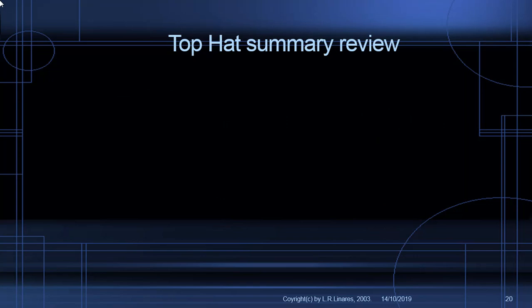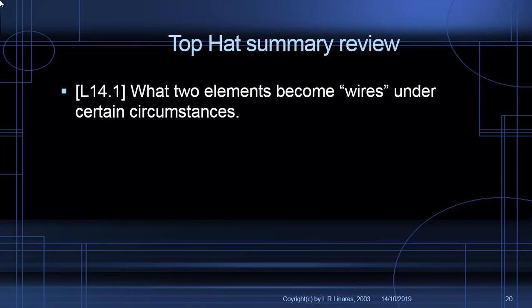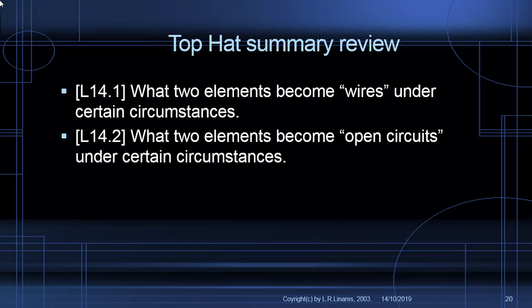At the end of class I ask Top Hat questions. What are two elements that become wires under certain circumstances? The answer: inductors in DC steady state behave like wires, and also independent voltage sources — when we kill sources, they become wires. And which two elements become open circuits? Capacitors become open circuits in DC steady state, and current sources become open circuits when we kill sources.